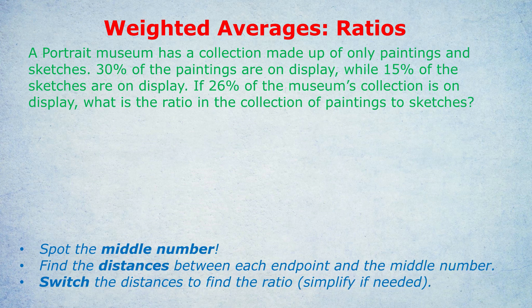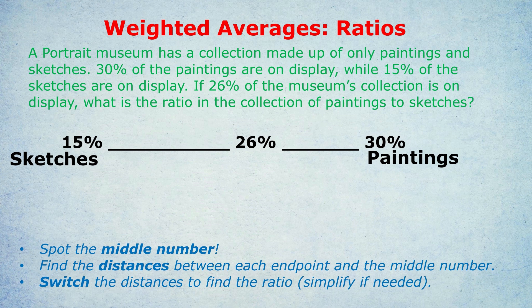It starts with a number line, where we simply draw out the number on the left, the number on the right, and the middle number. At this point, you might say, oh, I have an algebraic method, and I know that method — I used to teach that way, but I think this way is superior. Others of you would say, well, I can kind of tell there must be more paintings, because that's the thing that the weighted average, the middle number, is closest to. And you're right, but this method is going to give us an accurate ratio between paintings and sketches. The first step in the trick: you find the distance between the number on the left and the middle number, and also the middle number and the number on the right, and you write those two distances on top on the number line. This would be 4 on the right and 11 on the left. Those are the two distances.